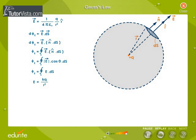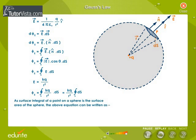We know that e is equal to kq by r squared. Substituting the value of e in the equation, we get phi e is equal to the surface integral of kq divided by r squared dot vector ds. As surface integral of a point on a sphere is the surface area of the sphere, the equation becomes phi e equals kq dot 4 pi.